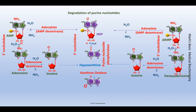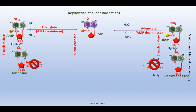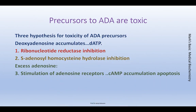Hypoxanthine is converted to xanthine in the presence of xanthine oxidase, and xanthine is converted to uric acid, also in the presence of xanthine oxidase. Uric acid is water-soluble and is excreted out of the body. In ADA deficiency, this enzyme is deficient, so the pathway stops and toxic precursors accumulate — specifically adenosine and deoxyadenosine. There are three proposed mechanisms for the toxicity. The first two rely on the accumulation of dATP.